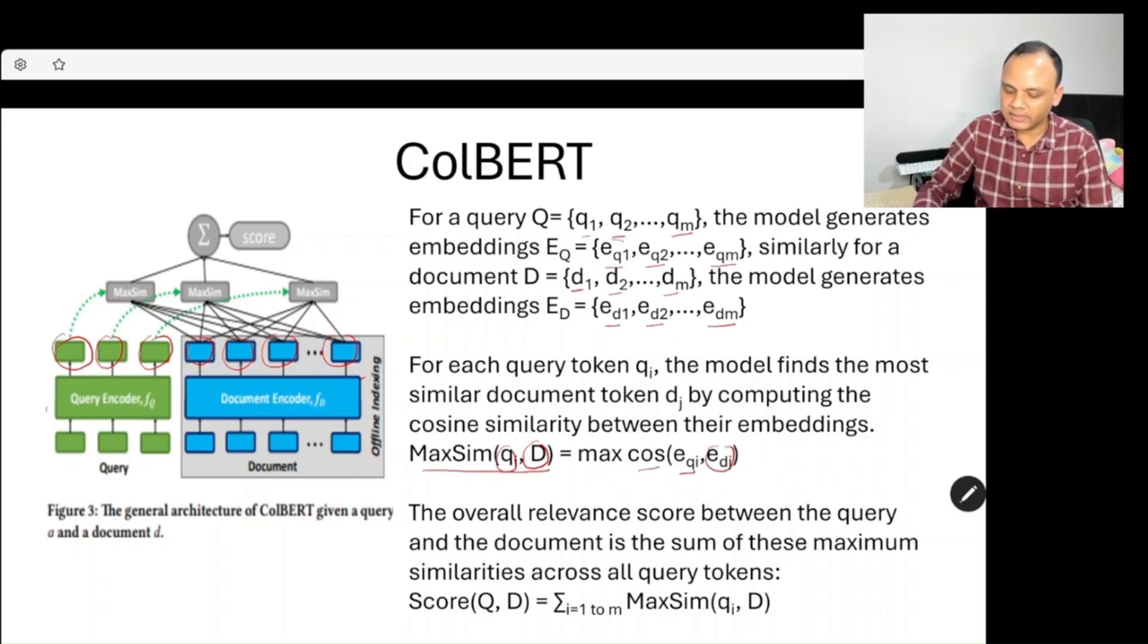So maximum similarity is found as follows: eq1 goes through the formula MaxSim(q, D), where it interacts with each individual document token and finds which document token gives the maximum cosine similarity.